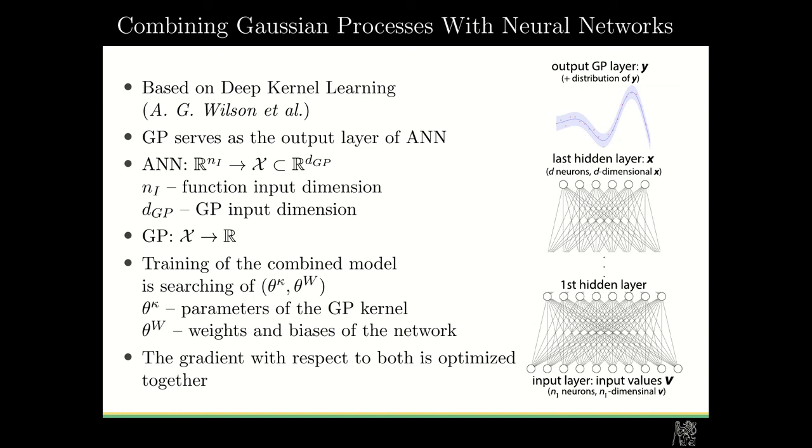The training of this combined model is in fact a search of two sets of parameters. The first one is the set of parameters of the Gaussian process, and the second one is the set of parameters of the neural network. Here it works that the gradient is computed in respect to both together and optimized together.